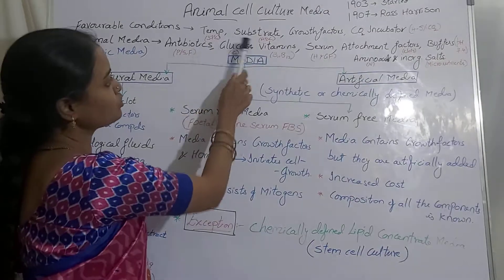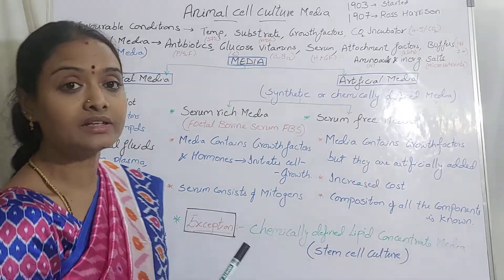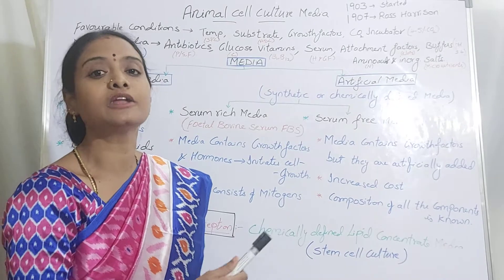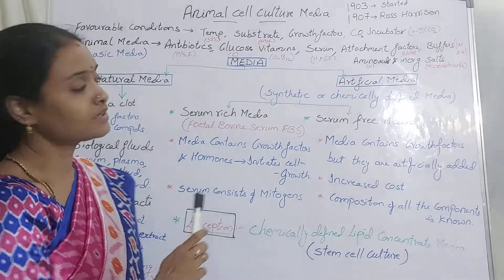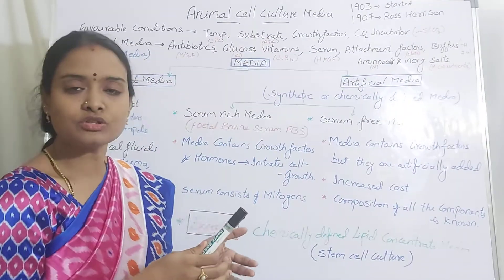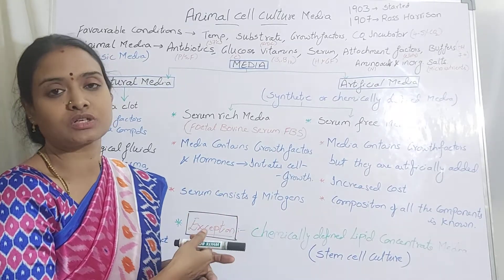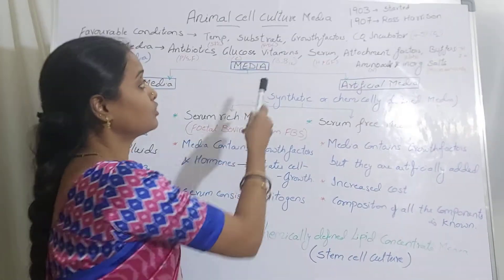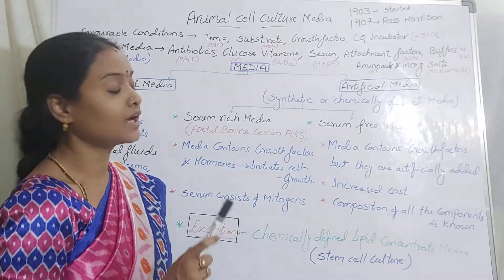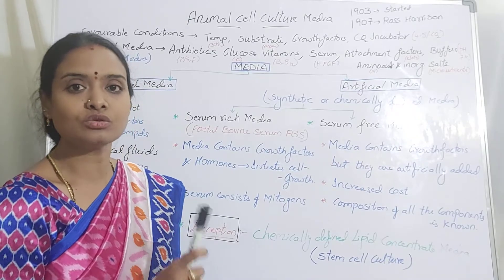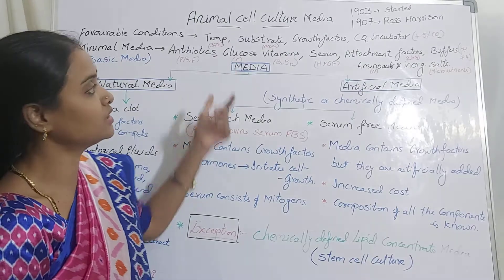Next, the substrate — here substrate is not food, but it is the container or vessel in which the animal cells are cultured. There are anchorage-dependent cells, meaning these cells adhere to the substrate; they depend on it. Once they adhere to the substrate, only then do they start growing. Anchorage-dependent cells consist of anchorage proteins, which initiate binding to the substrate.